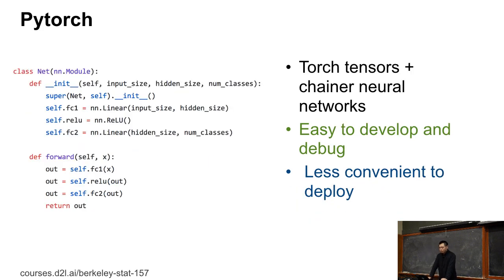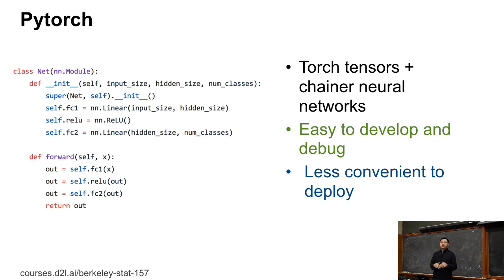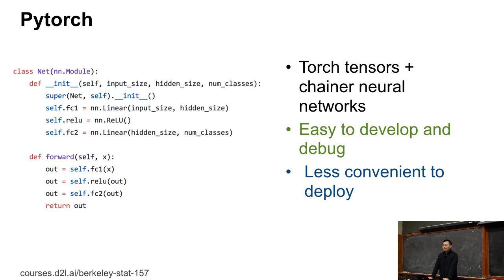PyTorch is another very popular framework. PyTorch grabs the tensor interface from Torch and the neural network interface from Chainer. It's purely in Python, so it's pretty easy to understand — if you're a Python user, you can read PyTorch code easily. However, because it's so closely integrated with Python, PyTorch may be hard to deploy for industrial applications, especially when your application is written in Java or needs to run on mobile phones with efficiency constraints. But PyTorch is so easy to use that it's become very popular in the research world.